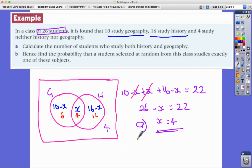Part A we've done it, X equals 4, that's the number of students who study both history and geography. Part B, hence use the information to find the probability that a student selected at random from this class studies exactly one of these subjects. Well I've made progress with that already because I've substituted X equals 4 into these and found the value.